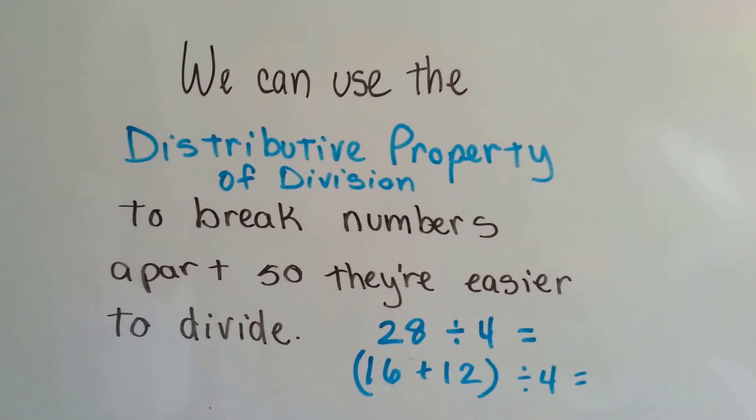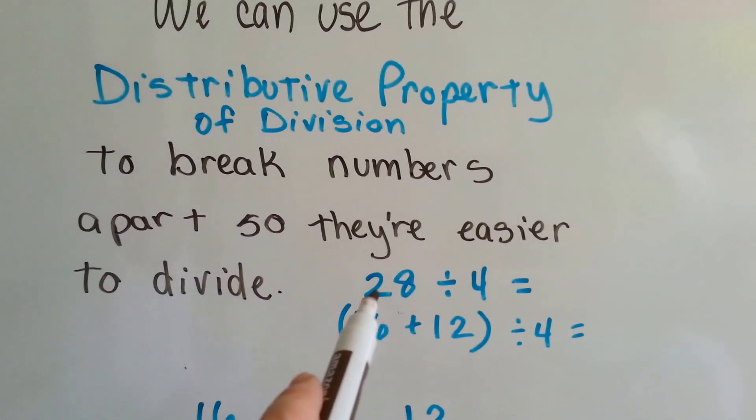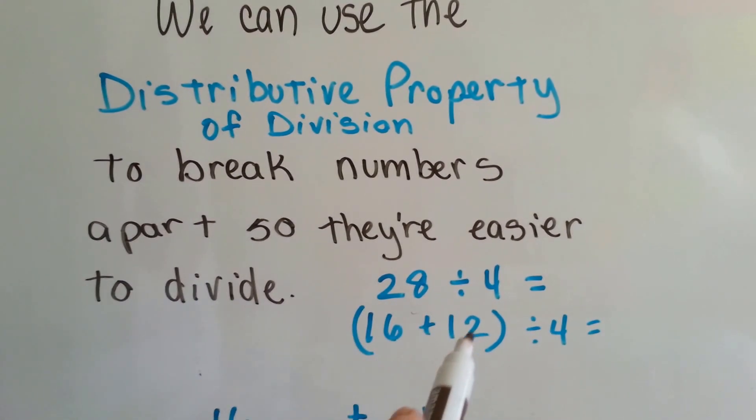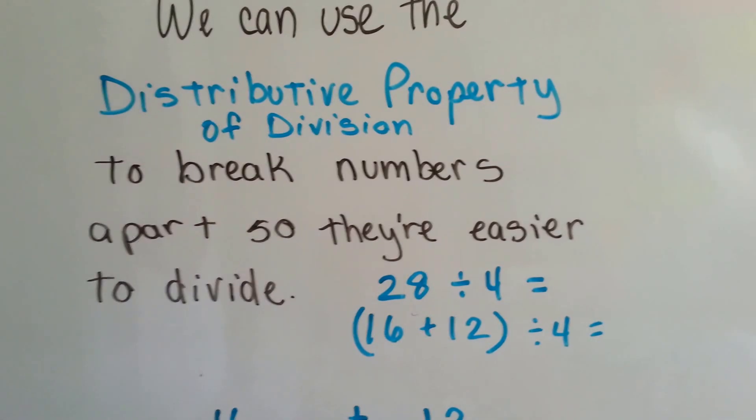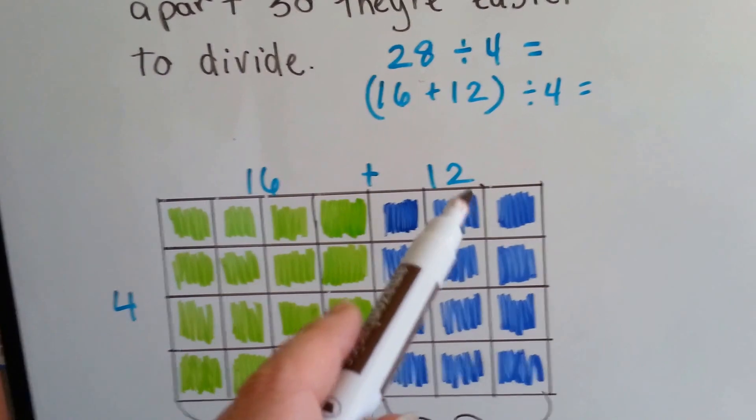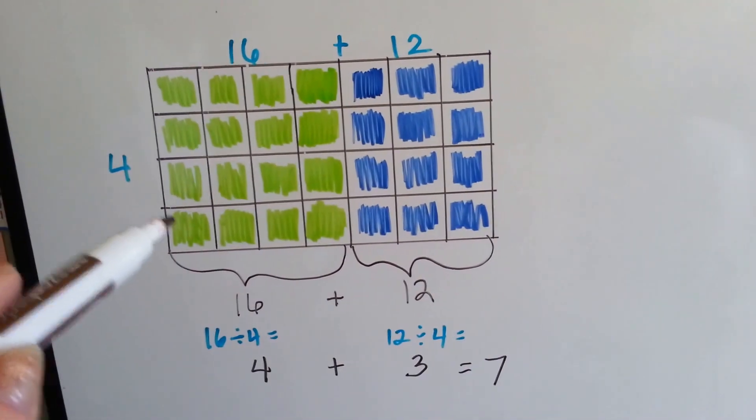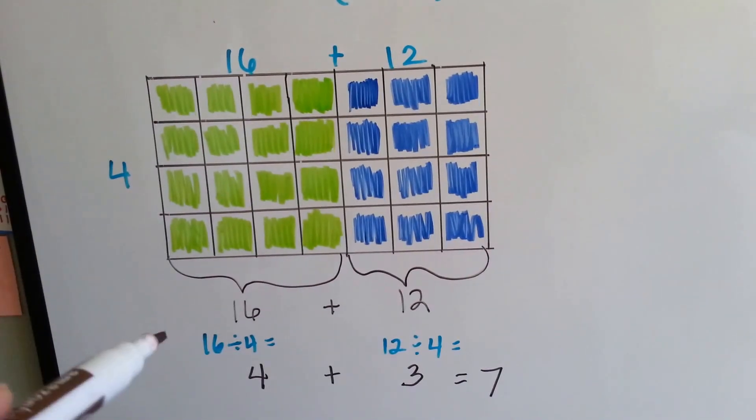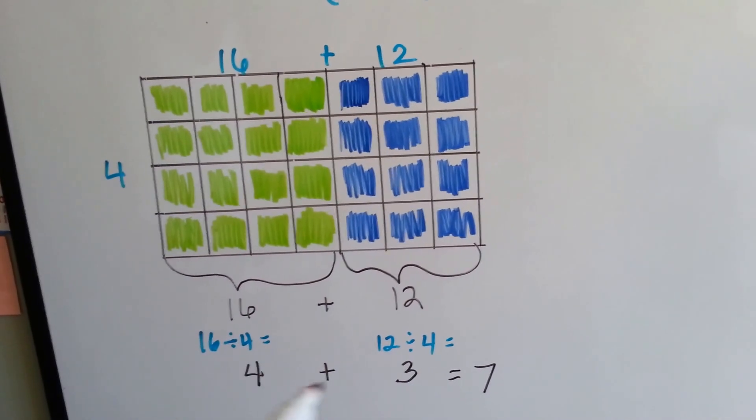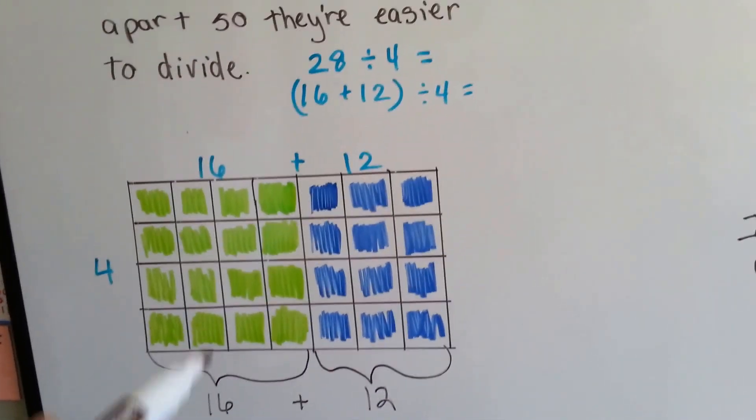We can use the distributive property of division to break the numbers apart so they're easier to divide. So instead of doing 28 divided by 4, we could do 16 plus 12, because 16 plus 12 is equal to 28. And we can divide the 16 by 4, and then divide the 12 by 4. 16 divided by 4 is 4, 12 divided by 4 is 3, and that gives us 4 plus 3, which is 7. When you're doing this with a very large number, it really helps.